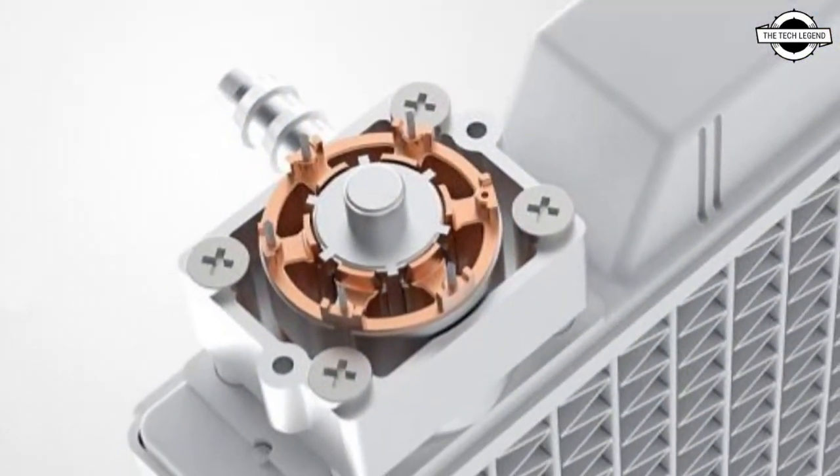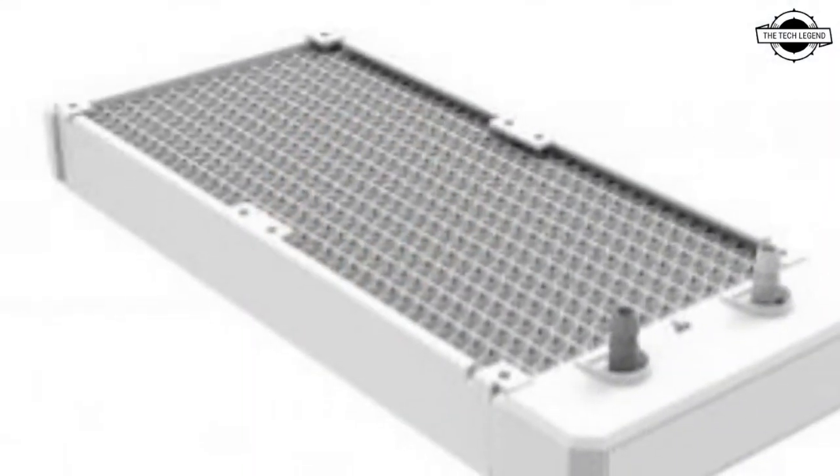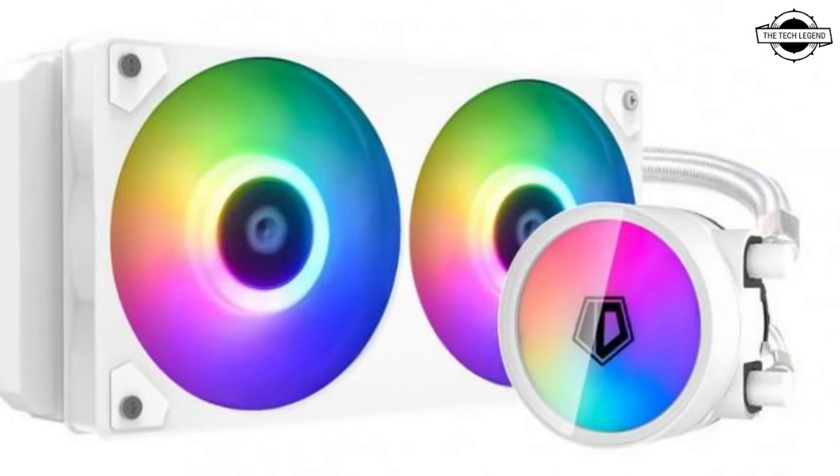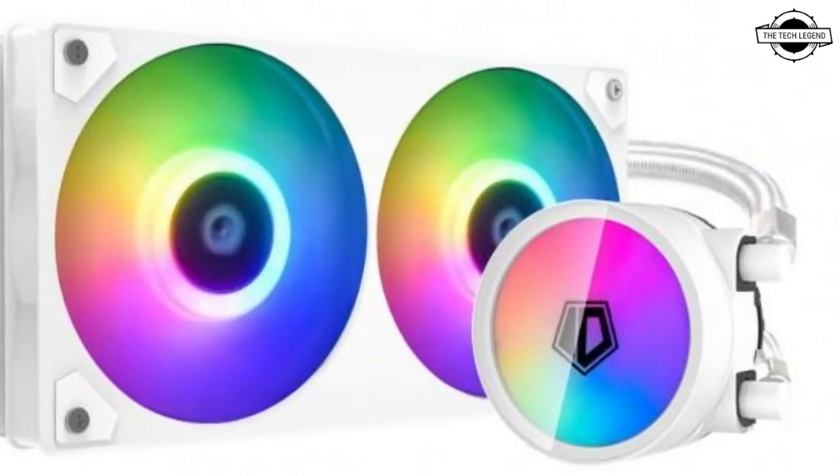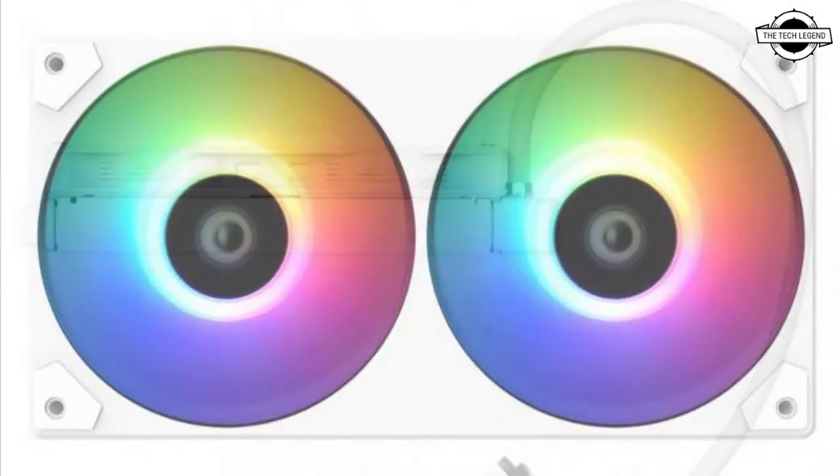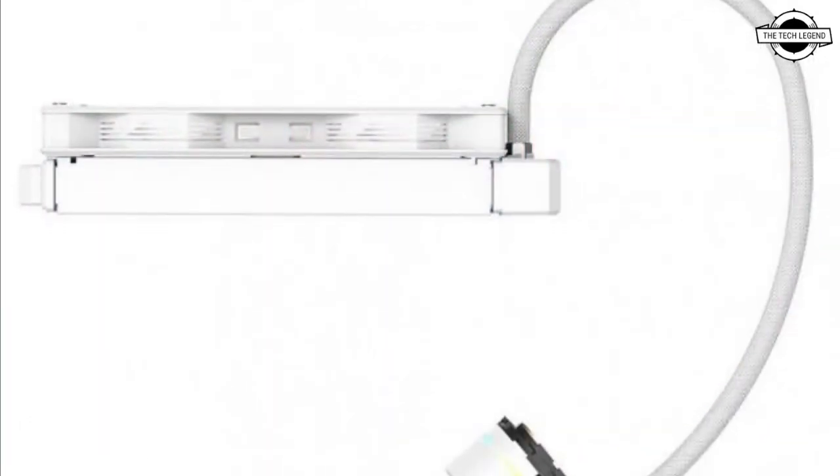The bearing of the cooling fan is 2 ball bearing and the rotation speed is 900 to 2000 rpm. Air volume is 56.5 CFM into 2, and the static pressure is 1.99 mm H2O. The noise level is 16 to 31.5 dBA.